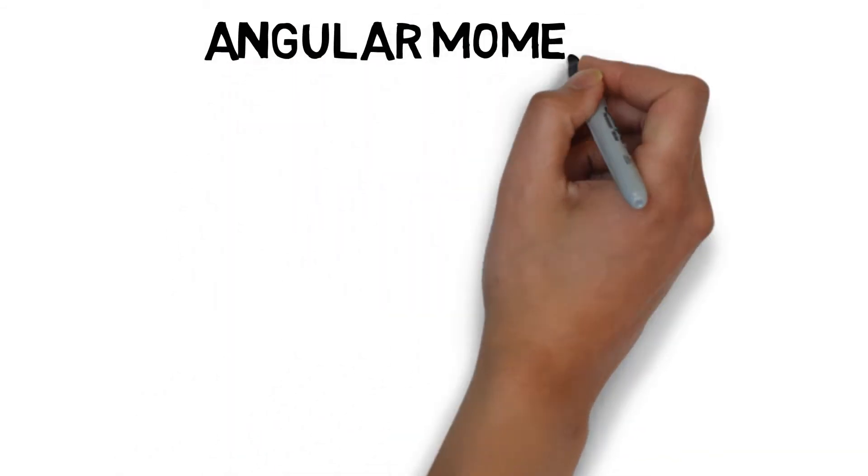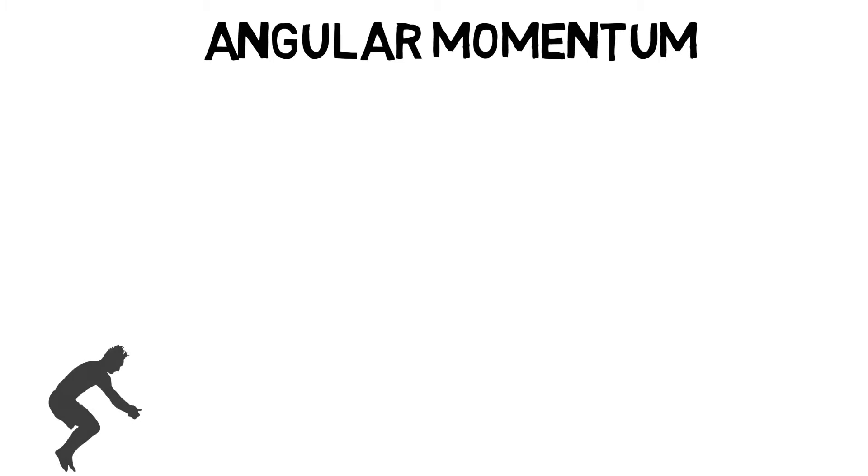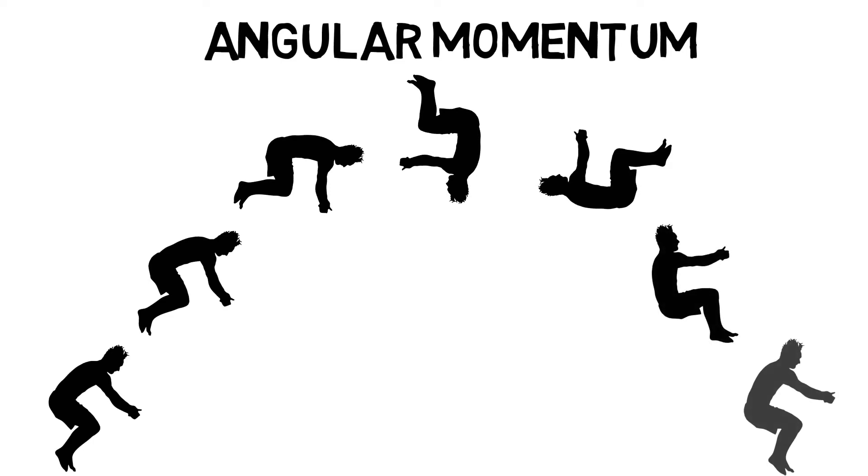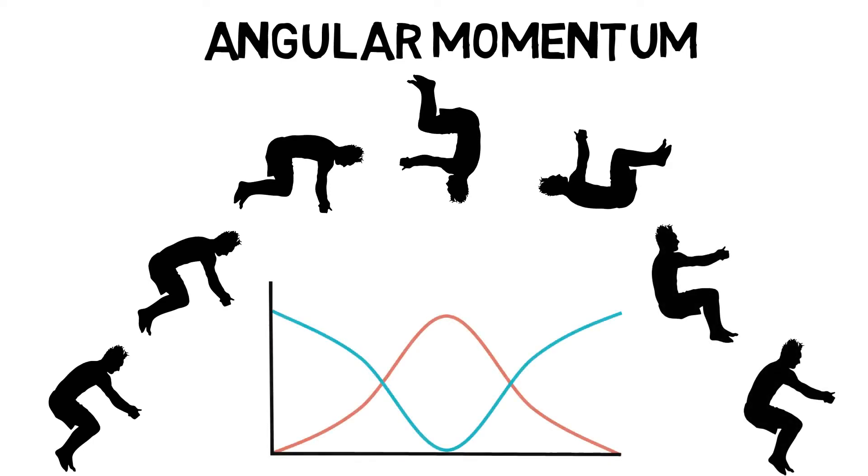Angular momentum is the relationship between the amount of inertia and angular velocity, or what happens when our bodies spin and turn. It is inversely proportional, so when one goes up, the other one goes down. If the rate of spin increases, the amount of resistance decreases.